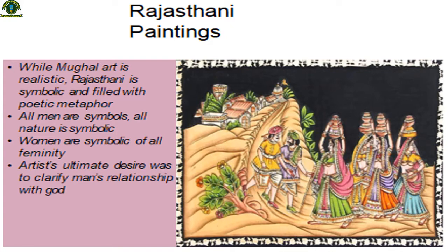In Rajasthani painting, as you can see in the picture, it is symbolic — men is a symbol, nature and women are symbols of femininity. The artist's desire is to show man's relationship with God. You can also see the details: rocks are in stylized form, plants and colors are both different from Jain paintings, but the drawing is better than Jain paintings.